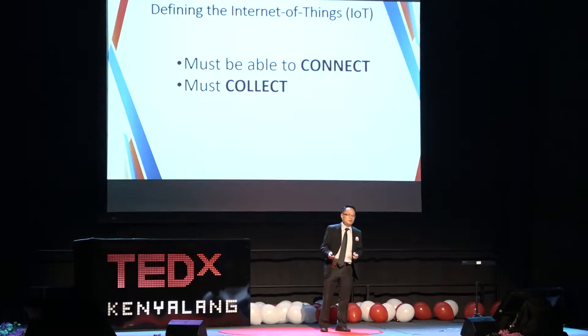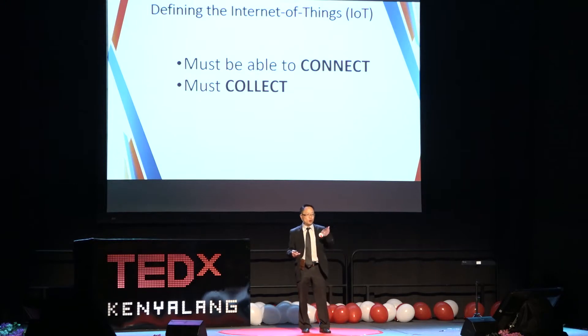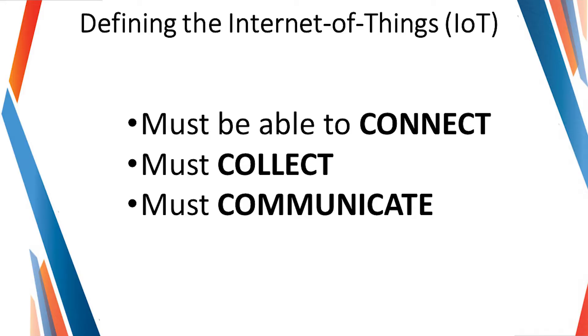It needs to be able to convert a physical phenomenon through a sensor — such as temperature, humidity, motion, and so forth — before you send it to the internet. Last but not least, from the raw data that you've collected, you need to represent it in a way that makes sense, to use it to make decisions and solve a particular problem.